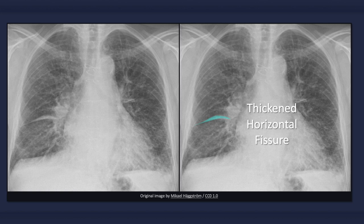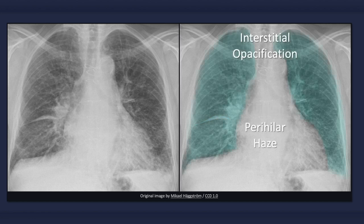Also evident in this image is a thickened minor, that is horizontal, fissure. This finding is easier to detect on a lateral radiograph, where both the oblique and horizontal fissures may be visible. Collectively, interstitial edema results in widespread blurring of lung markings, with the loss of definition resulting in a hazy appearance of the lung fields and hilum bilaterally.